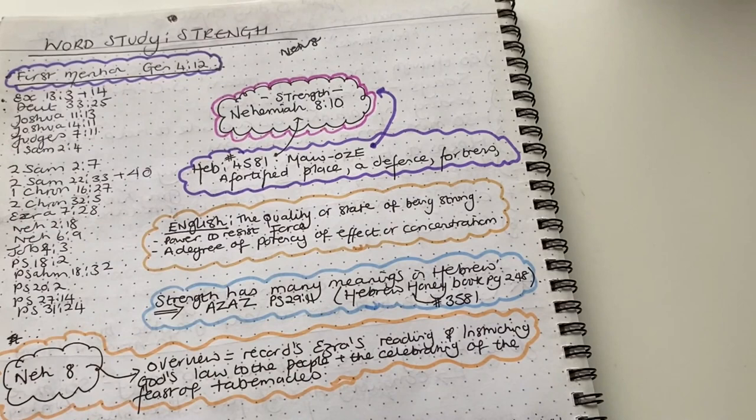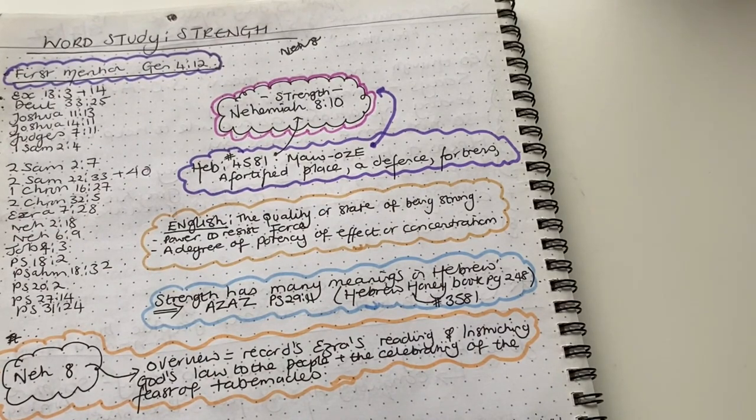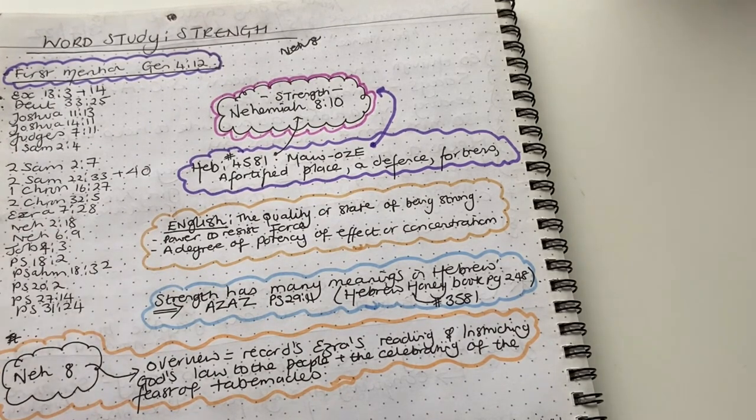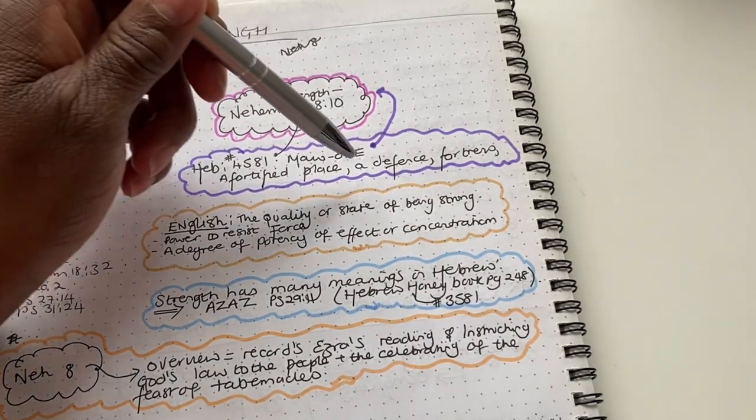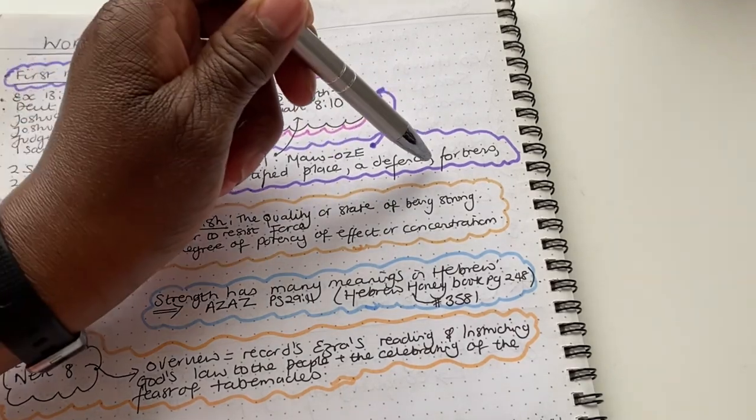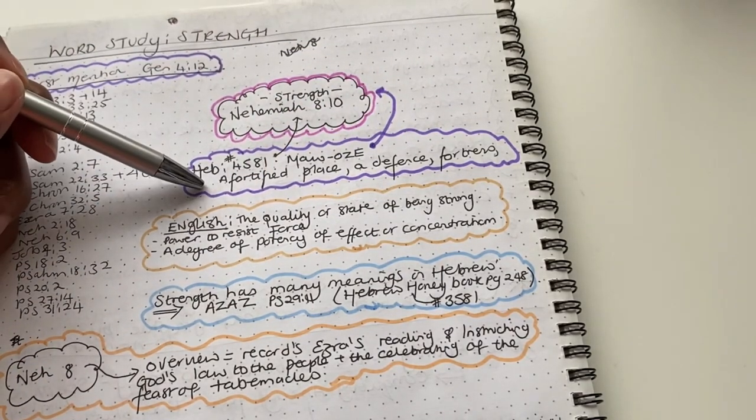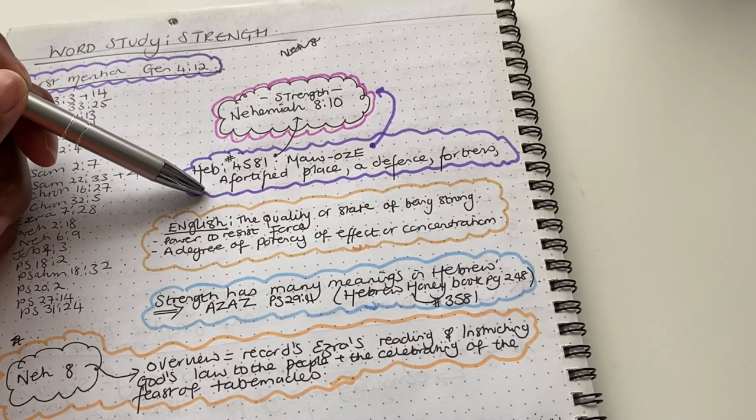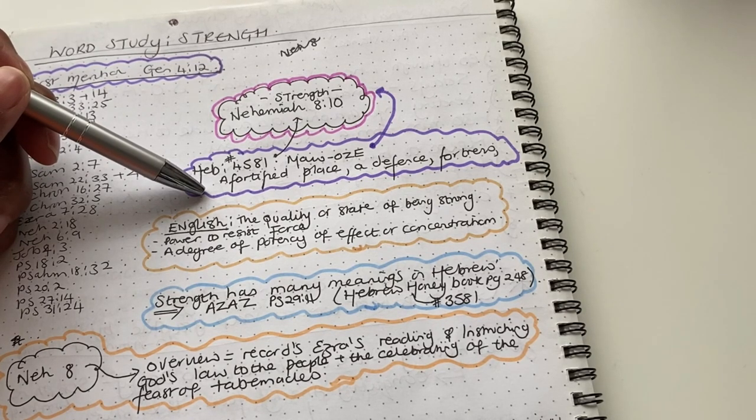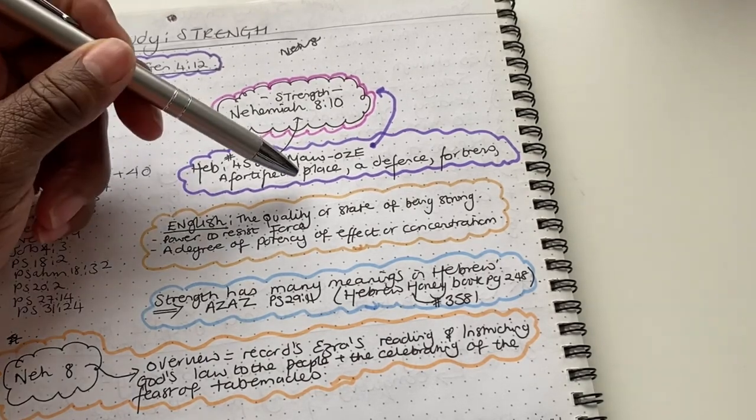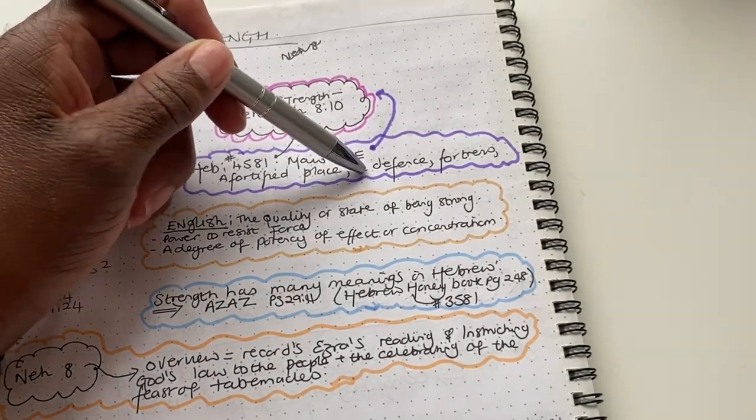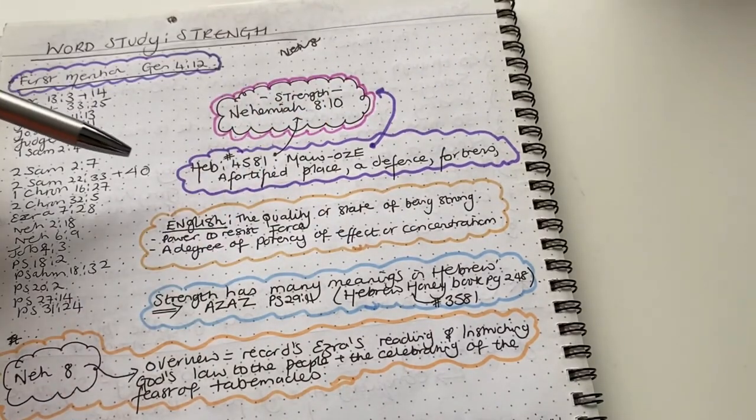So, when Ezra was talking to the people, he was telling them that the joy of the Lord is a fortified place. It's a protected place. It's a place that is your defense. It is a fortress. It is a place of safety. So, when we're feeling maybe that things are not going the right way or things are difficult, we must ask the Lord for his joy because it will strengthen us. It will fortify us. It will be a place of defense. It will be a fortress for us.